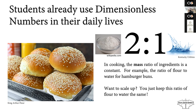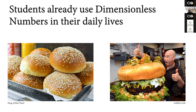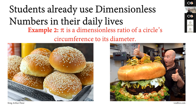The key to this is that if they wanted to scale up and make 500 hamburger buns as opposed to two, or make the biggest hamburger bun ever, all they have to do is keep the ratio of flour to water the same. Another example of a non-dimensional number that students run into in their daily lives is pi — a dimensionless ratio of a circle's circumference to its diameter. It gives us a lot of information about the geometry of a circle without ever having to solve an equation. Pi tells us something about that geometry intrinsically.